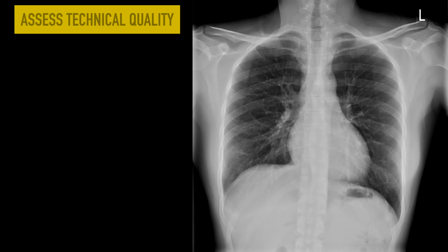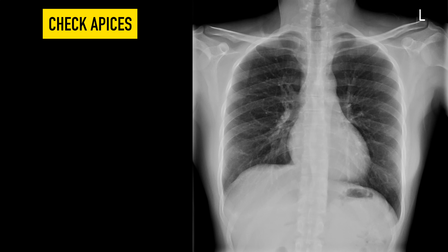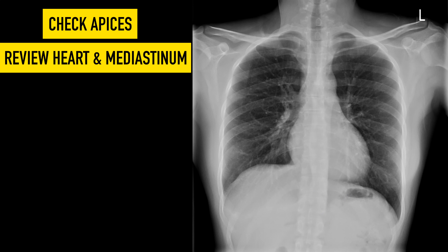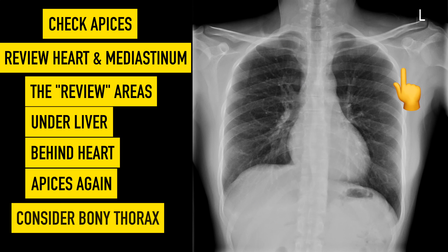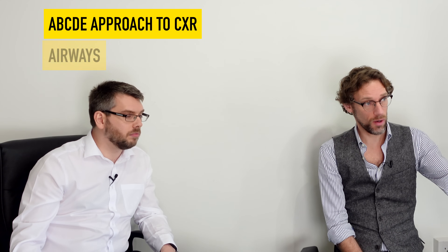I always like to start at the very top, work my way down, back around, and back up again. Once I've assessed sufficient technical quality, I look at the apices of one lung, move all the way down, start at the apices of the other side, move down that lung, then look at the heart and mediastinum, then go back and look at the review areas — underneath the liver, behind the heart, back at the apices again — then consider the bony thorax. The important thing is to do everything systematically, take in everything, and not stop searching once you've seen something, because some patients have more than one pathology.